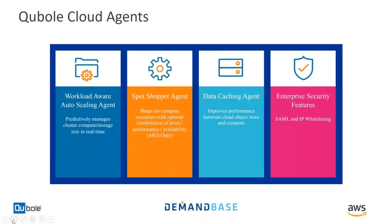On AWS, we take advantage of Spot Instances. AWS does something fantastic with their EC2 instances — excess capacity not picked up by on-demand is put into a marketplace where you can bid on EC2 instances at a very high discount rate, essentially pennies on the dollar. You can save upwards of 80–90% off on-demand pricing. The trade-off is that it's a volatile market — sometimes you can get the nodes, sometimes you don't, and you can lose nodes if someone else is willing to pay more. But Kubel has built-in intelligence to help you leverage Spot Instances at massive scale and mitigate problems from this volatile market.